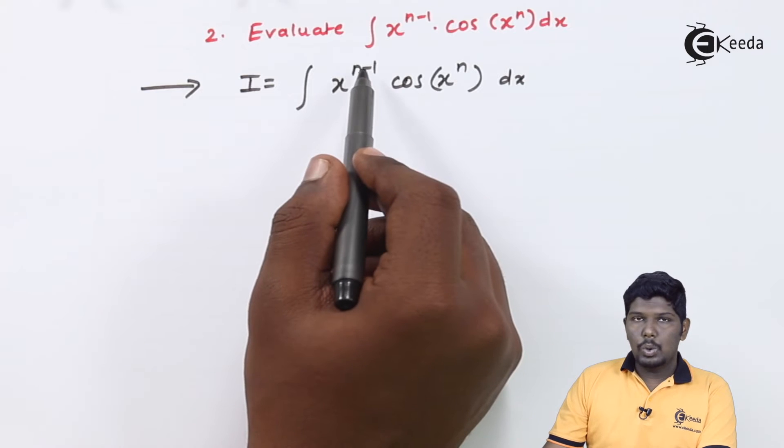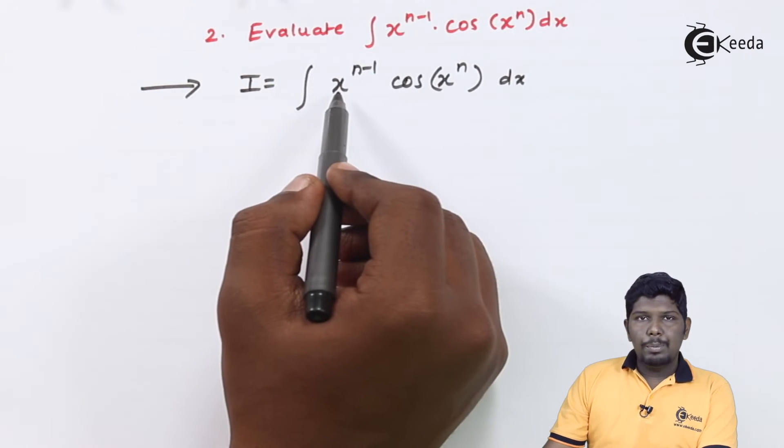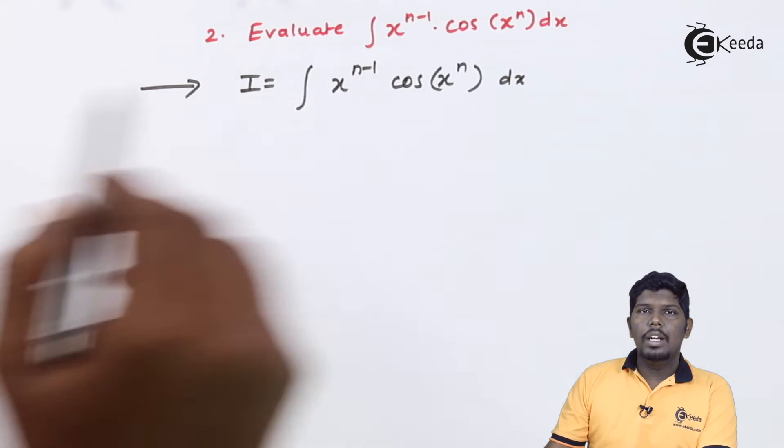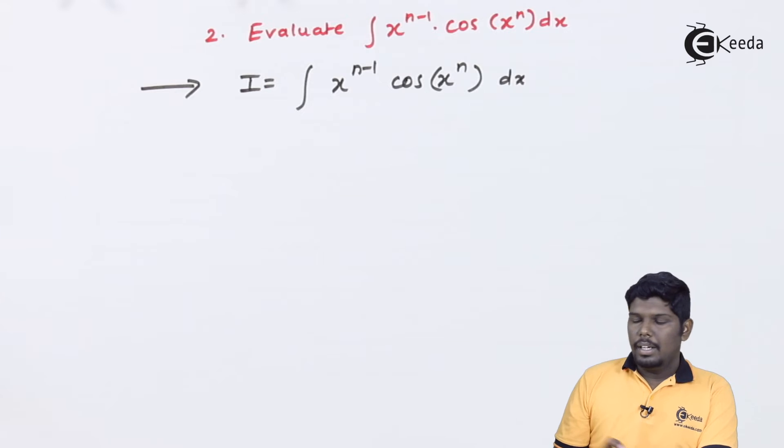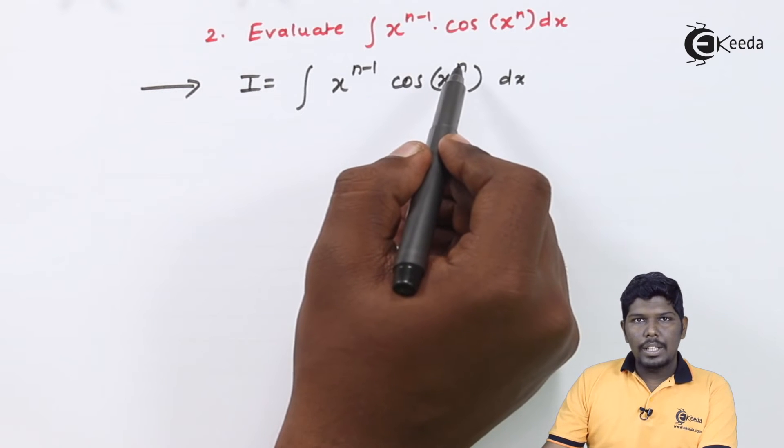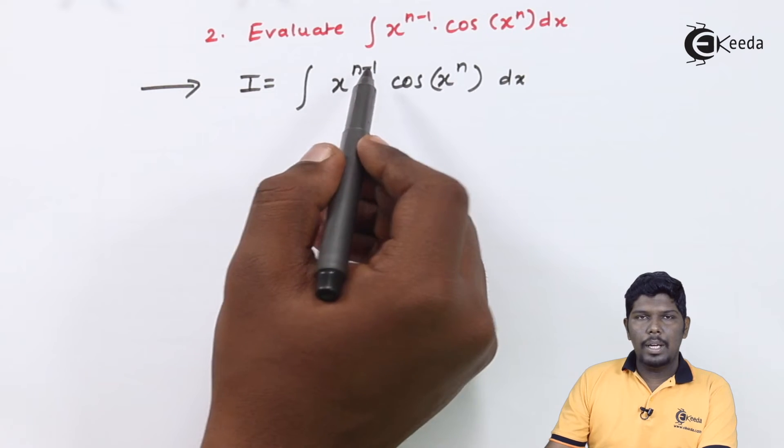We have two options: x raise to n minus 1 and cos of x raise to n. If I substitute x raise to n minus 1 as t, its derivative will be never x raise to n. But if I substitute x raise to n as t, in its derivative part I will get the term x raise to n minus 1.